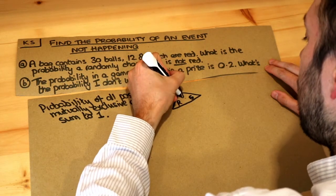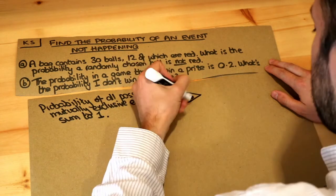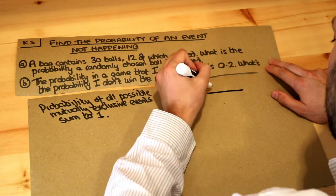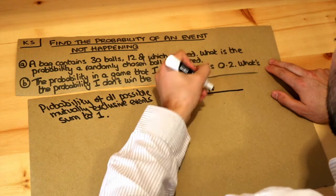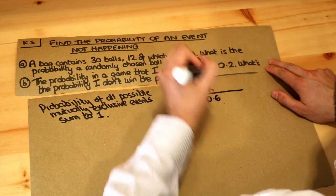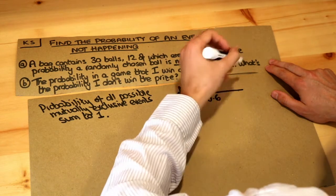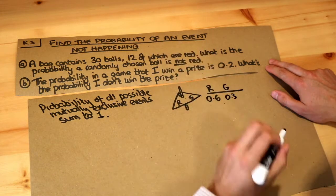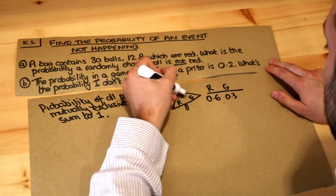Then if we had the probability of red was, I don't know, 0.6, and we're told that the probability of green was 0.3, then how would we find the probability of blue up here?